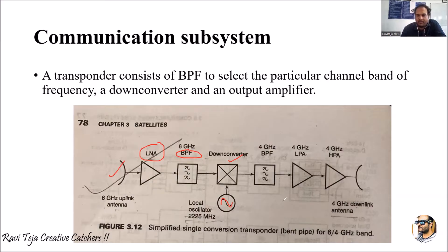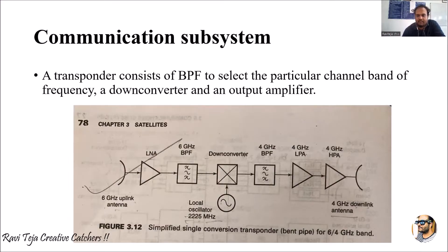The low power amplified signal is forwarded to a high power amplifier. After the signal passes through this high power amplifier, it is given to the downlink antenna, which operates at four gigahertz.